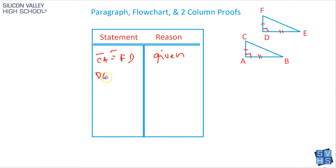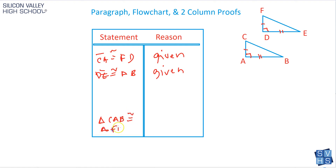Here's another given: segment DE is congruent to AB — reason: given. Here's the other trick about two-column proofs: the last statement, no matter what, has to be the question of the proof. We're trying to prove that triangle CAB is congruent to FDE, so the last statement has to be just that — triangle CAB is congruent to triangle FDE. How do I know that? Because that's the whole point of the proof. You chip your way down with statements and reasons all the way until the final statement, which in this case might be side-side-side. The point is, your final statement has to be what they asked you to prove.